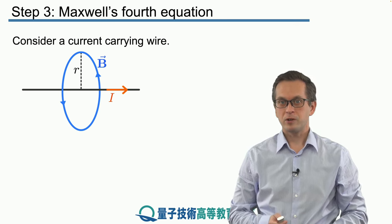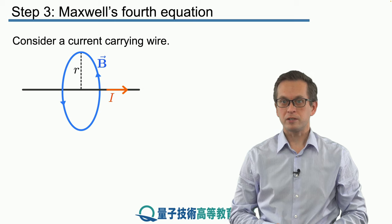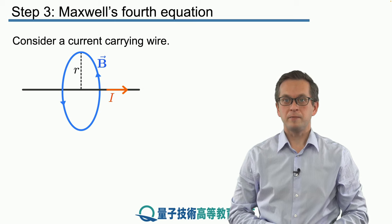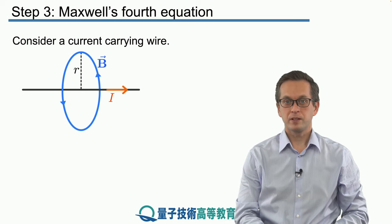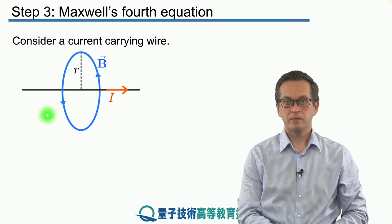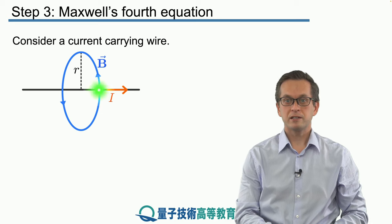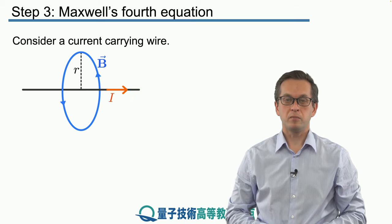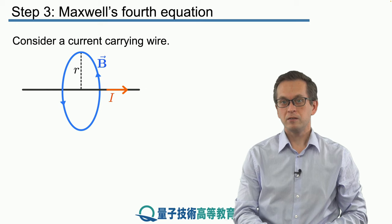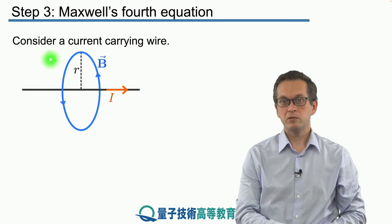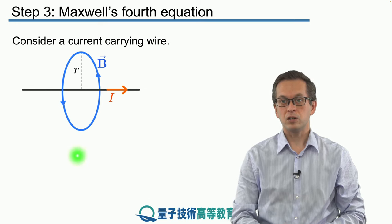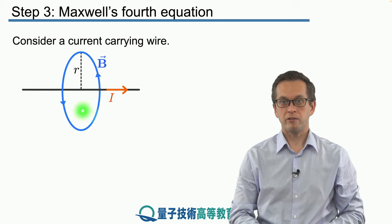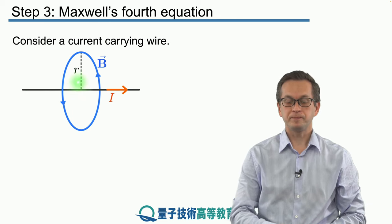In this case, we're going to consider a current-carrying wire. We've got here our wire, and there's some current flowing through it given by I. We are going to look at the induced magnetic field that's looping around this current-carrying wire at some distance r.